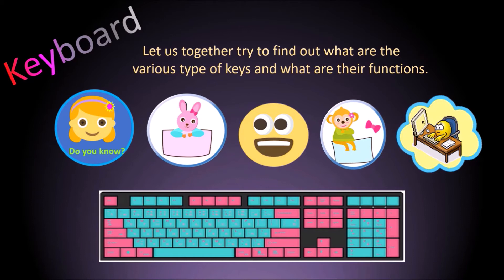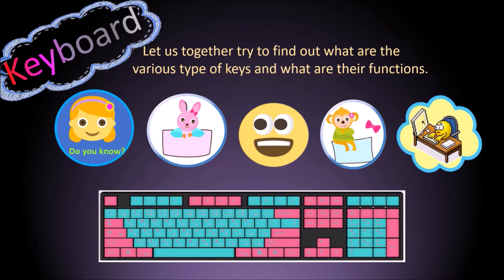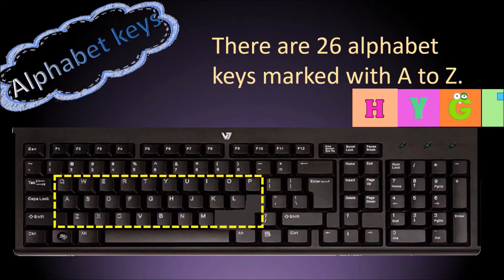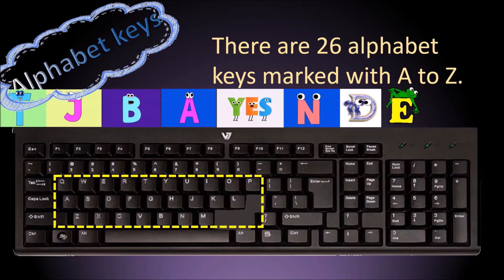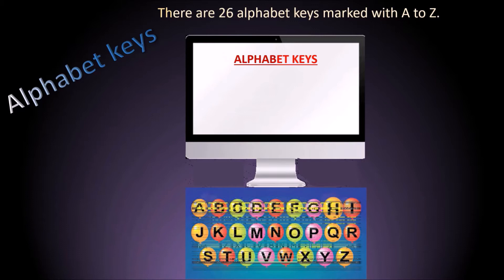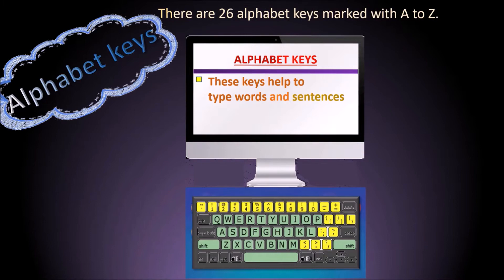Let us find out what are the various types of keys and what are their functions. Alphabet keys: there are 26 alphabet keys marked with A to Z. These keys help to type words and sentences.